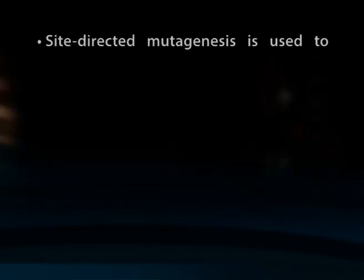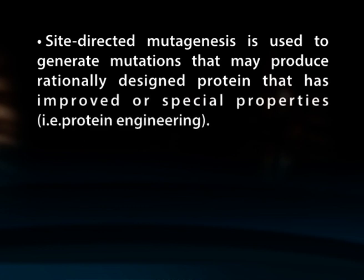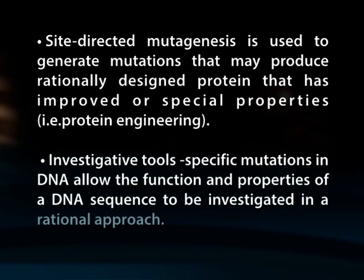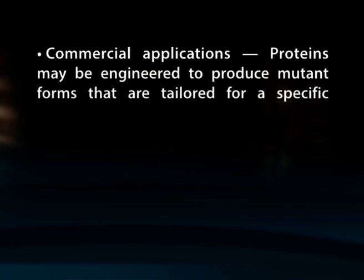Applications: Site-directed mutagenesis is used to generate mutations to design proteins with improved or special properties, as seen in protein engineering. Specific mutations in DNA allow the function and properties of a DNA sequence to be investigated in a rational approach. For commercial applications, proteins may be engineered to produce mutant forms tailored for a specific application. For example, commonly used laundry detergents may contain subtilisin, whose wild-type form has a methionine that can be oxidized by bleach, significantly reducing the activity of the protein. This methionine may be replaced by alanine or other residues, making it resistant to oxidation and thereby keeping the protein active in the presence of bleach.